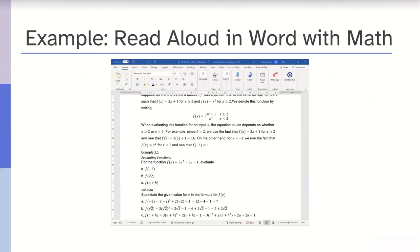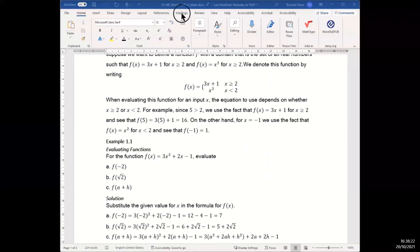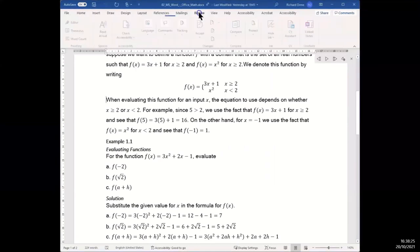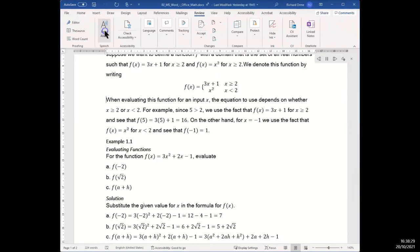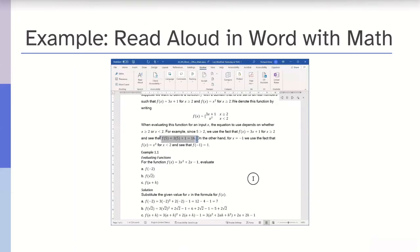So that's using the Word editor and you can do more complicated things as Richard showed earlier. So now we've shown using screen readers, but Word has a read aloud feature. So for people that aren't using screen readers and just want to hear it, you can go ahead and use that. So let's hear this. So we're starting off, we're going to click on the read aloud ribbon button. When evaluating this function for an input x, the equation to use depends on whether x greater than or equal to 2 or x less than 2. For example, since 5 greater than 2, we use the fact that f open paren x close paren equals 3x plus 1 for x greater than or equal to 2 and see that f open paren 5 close paren equals 3 open paren 5 close paren plus 1 equals 16.